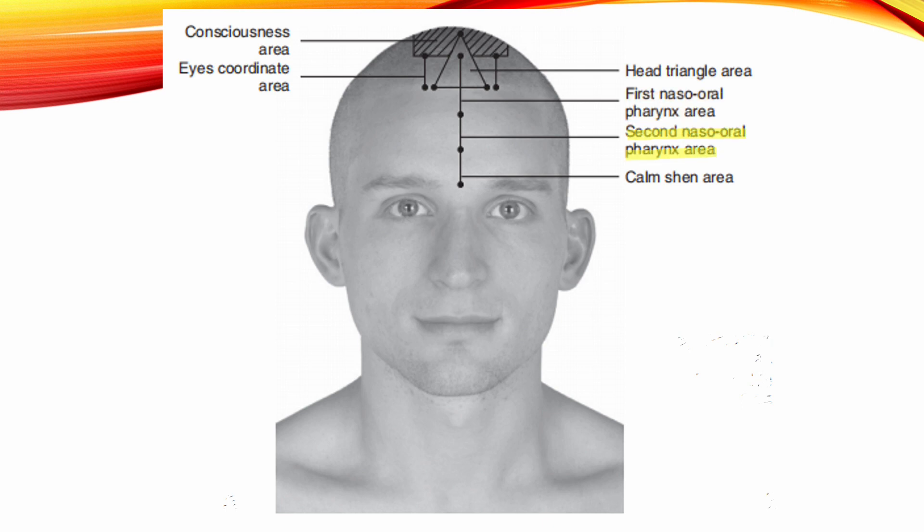Second Naso-Oral Pharynx Area: 2 cm below the first Naso-Oral Pharynx Area. Indications: Dizziness, nausea, vomiting, and poor appetite.